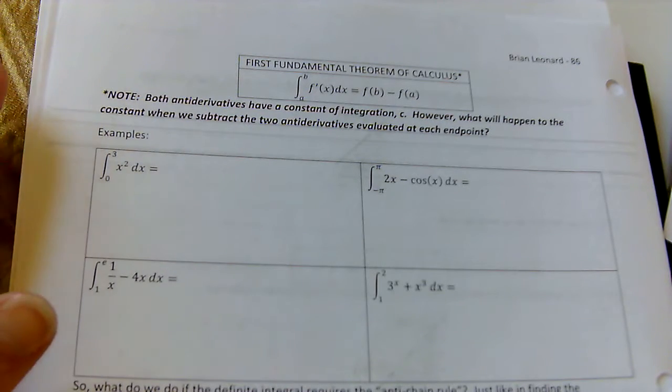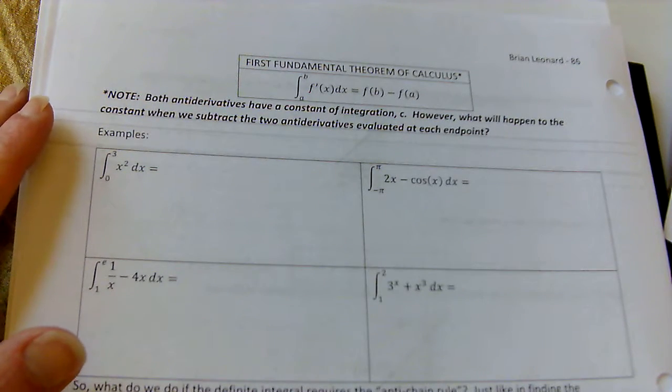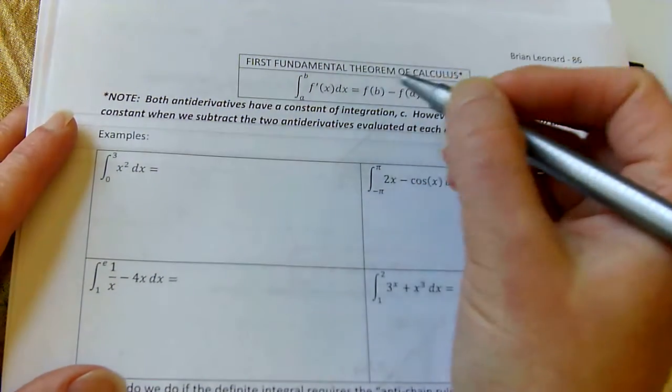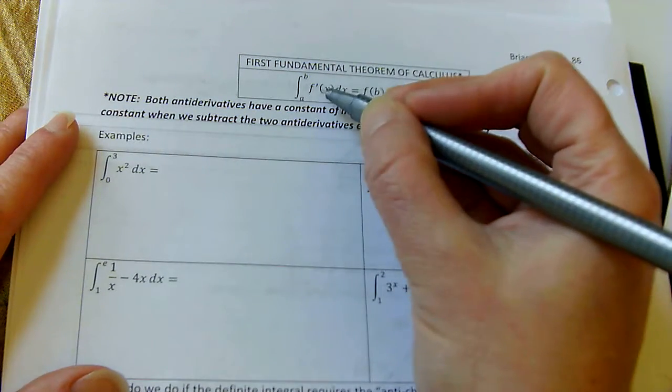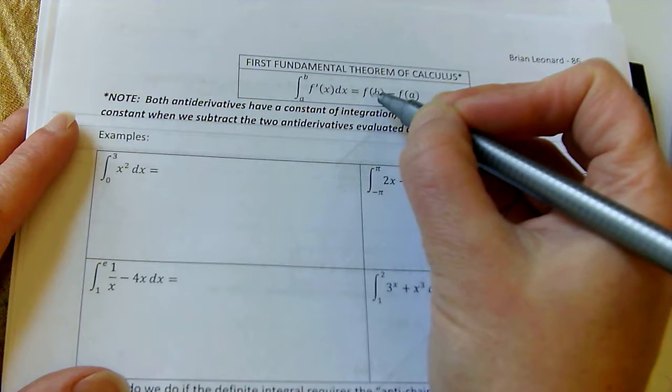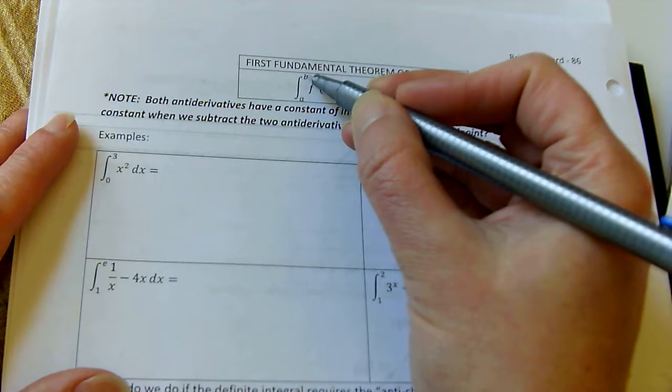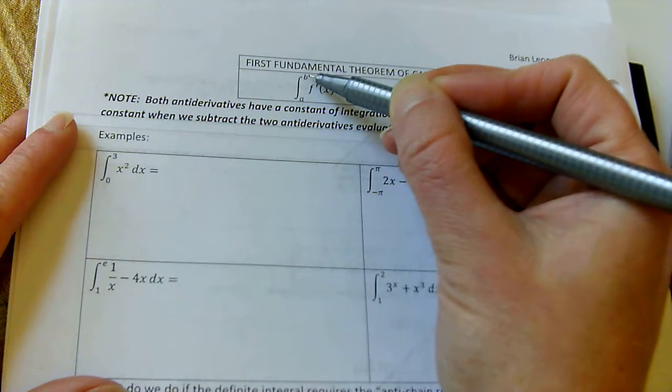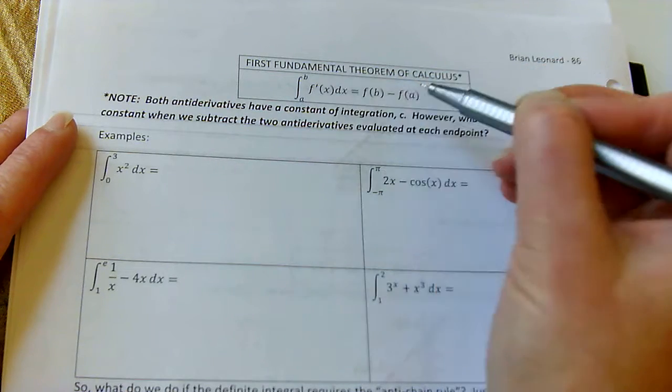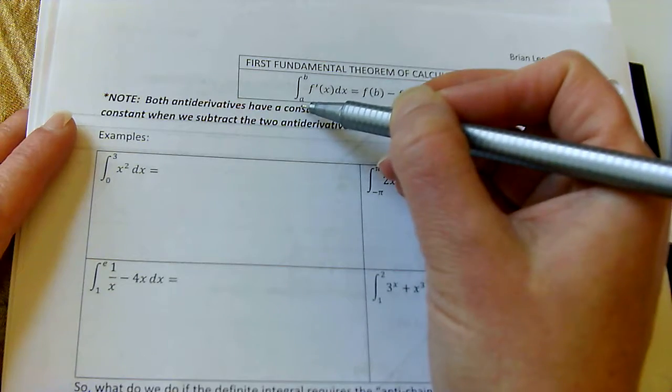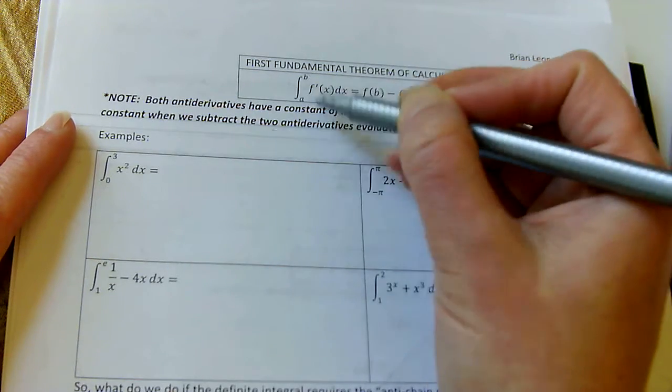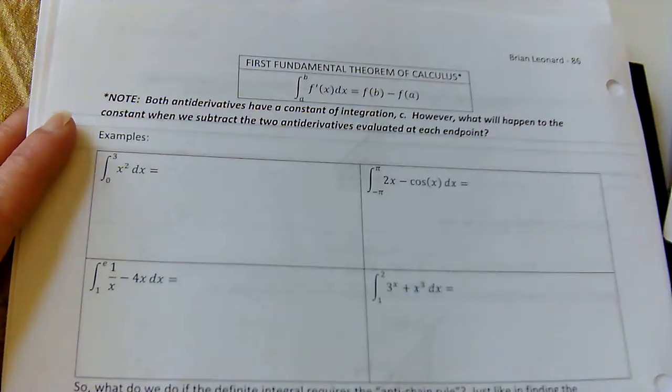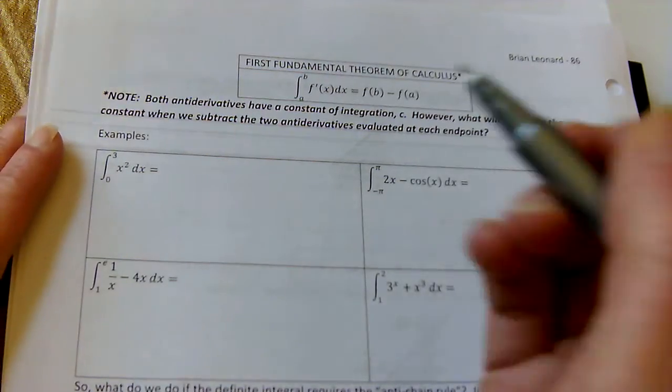Okay, let's take a look at the first fundamental theorem of calculus. What it says is that if we find the antiderivative and evaluate it at each endpoint, so the upper boundary minus the antiderivative at the lower boundary, we're going to find that area between them. So let's practice it.